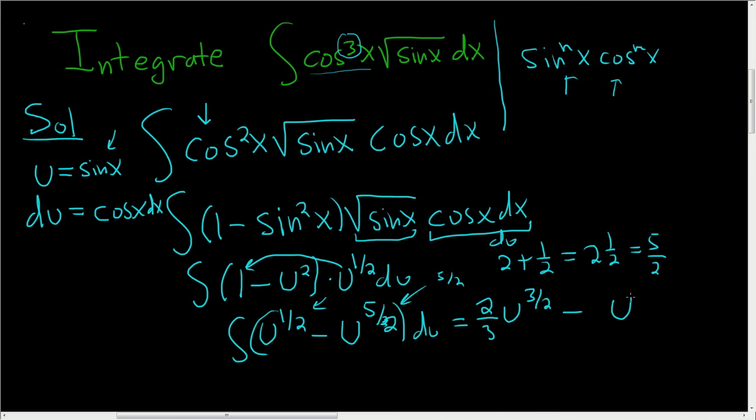Minus u to the 7 halves. But when you divide by 7 halves, you really multiply by 2 over 7 plus c.